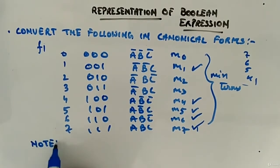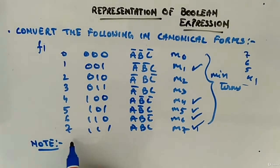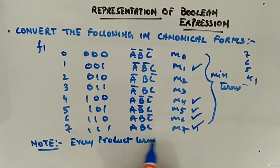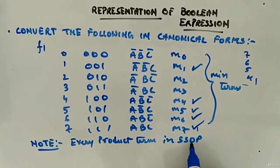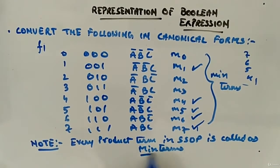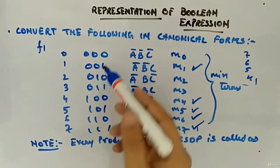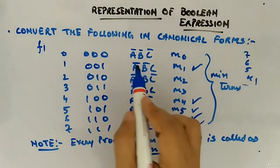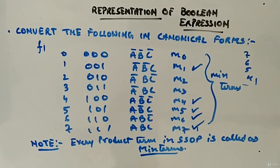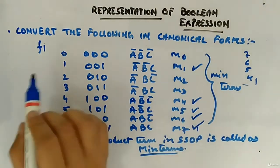So what I want to note here is every product term, these guys product terms in standard SOP, this is standard sum of product, is called as minterms which is very important. And this is the combination for 3 variables only. A, B, C, 3 variables are there. So only 8 combinations are there. If you will have 4 variables, 16 combinations will be there. So that is how you can imagine and you can write in this way.